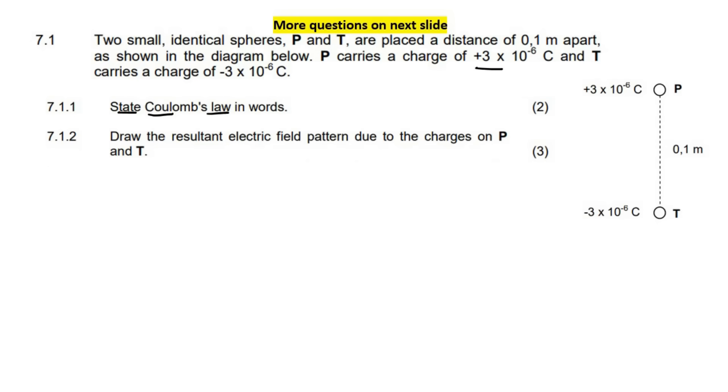This question says draw the resultant electric field pattern due to the charges on P and T. So what you need to understand is that if something is positive, then the electric field lines go away from it. If something is negative, the electric field lines go towards it.